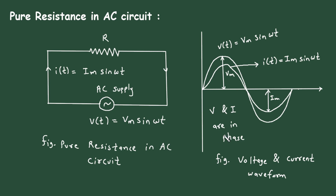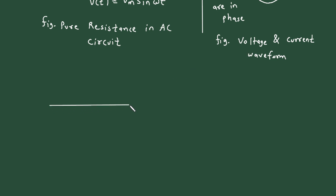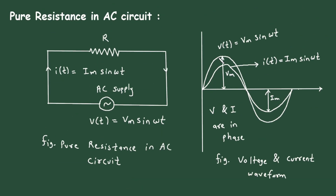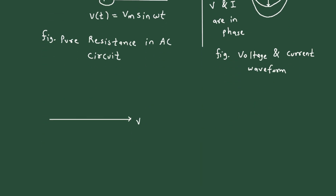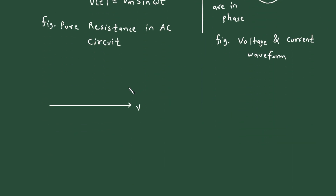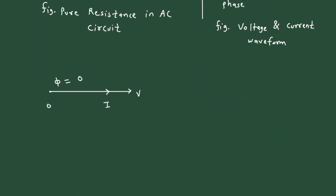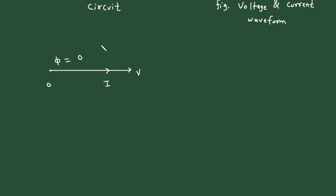Now if we want to draw a phasor diagram, we take voltage as the reference because both V and I start from 0. Here 0, π, and 2π are marked. The amplitude of V(t) is greater than that of I(t), so I will be on the same arrow but shorter. The phase angle φ = 0, meaning V and I are in phase. This is the phasor diagram.